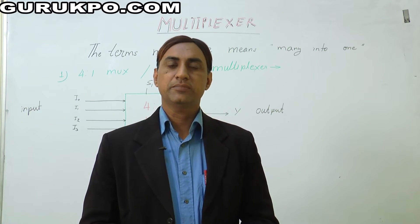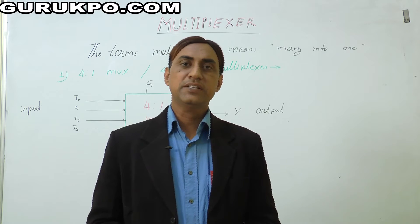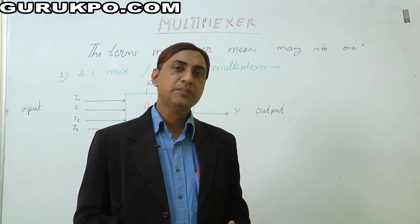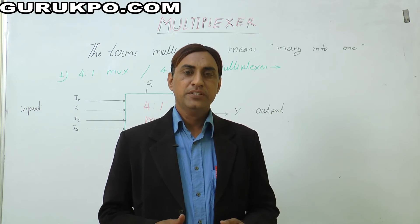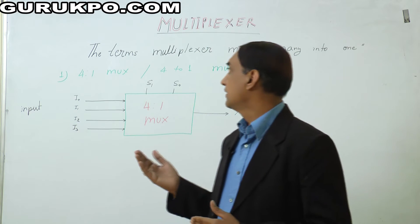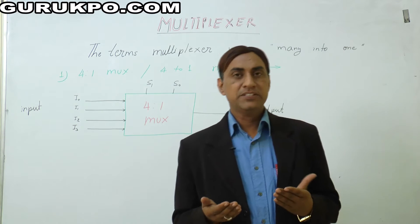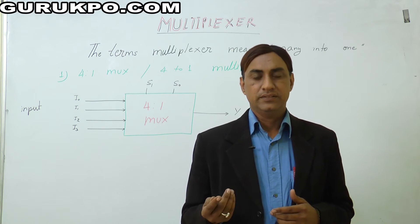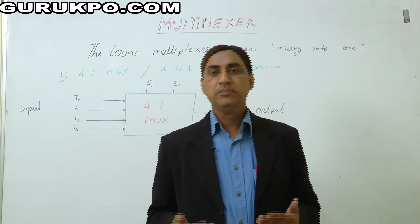We are discussing about multiplexing and demultiplexing. Multiplexing is a device used in digital electronics. Simply, multiplexing is a combinational logic circuit. Multiplexing means we use many signals in one — that is why we say the term multiplexing means many into one. Multiplexing is also called a data selector.